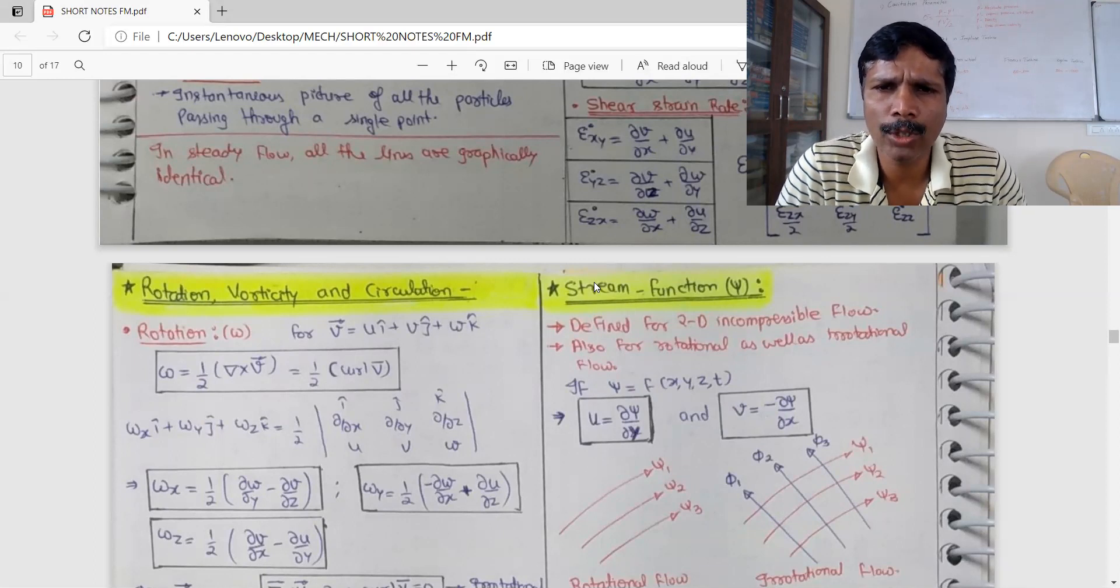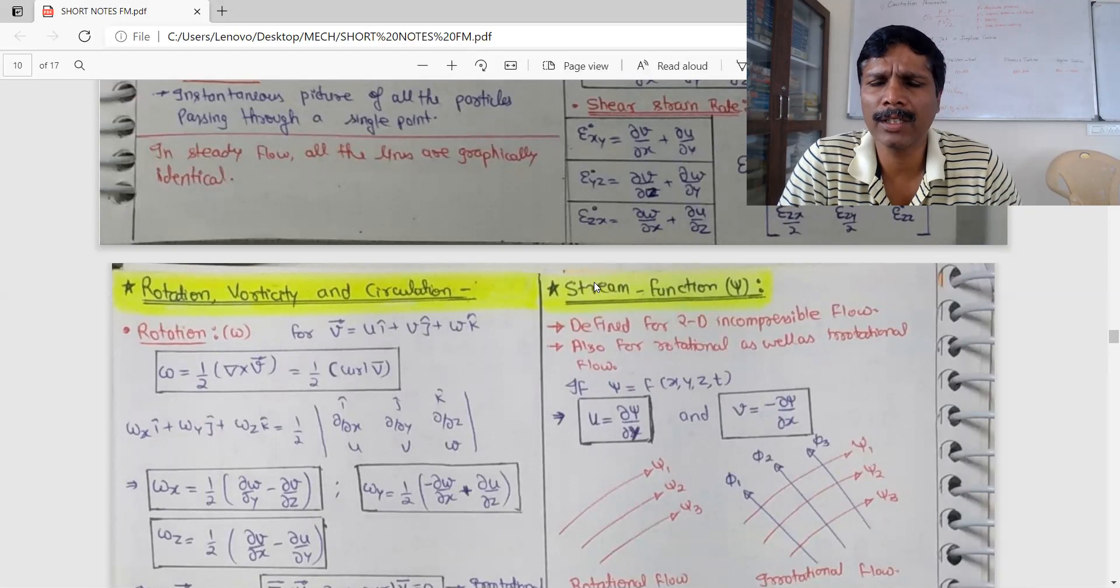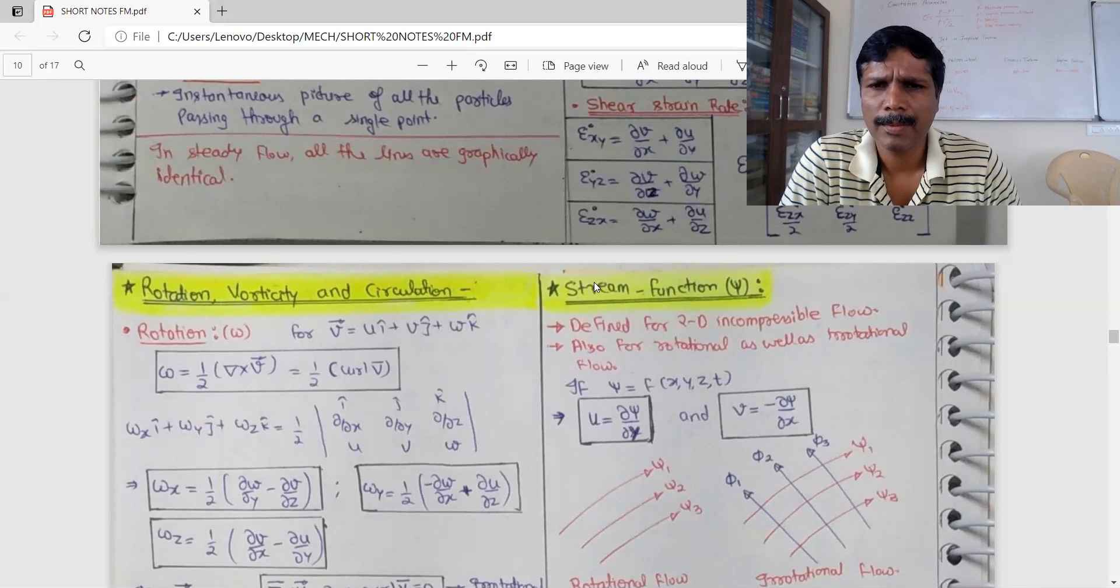This is defined for incompressible flow. Let me explain, stream function has two flows to define. Rotational flow to define and irrotational flow to define. But psi is the only rotation flow to satisfy. psi equal to f of x, y, t. u equal to d psi by dy, v equal to minus d psi by dx.